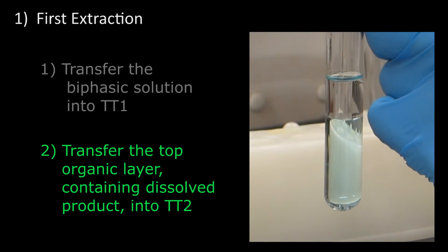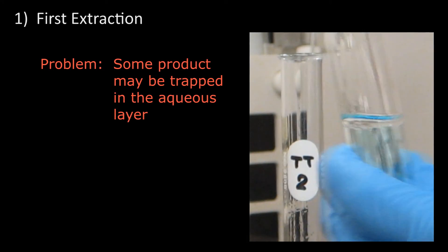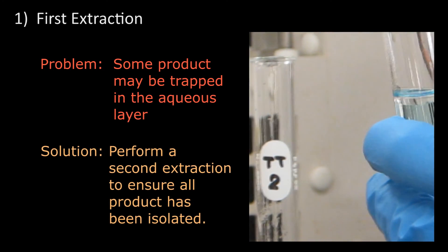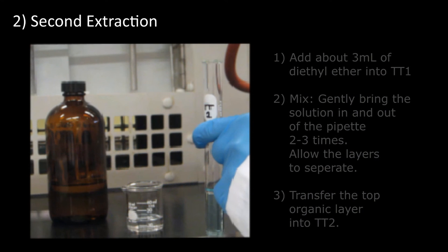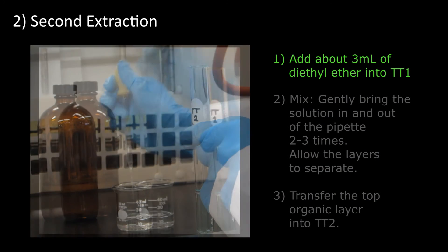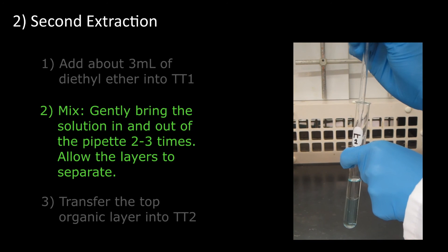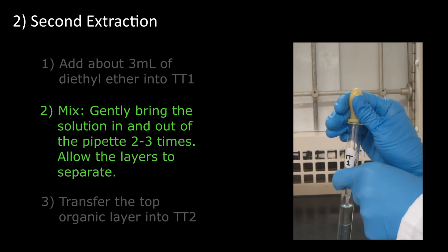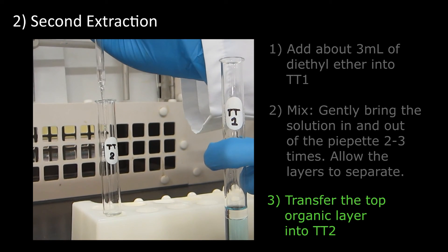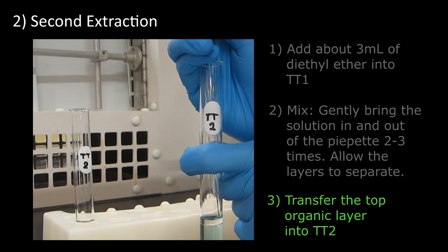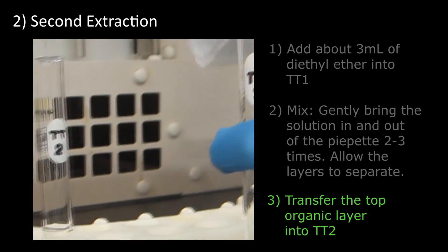Make sure not to draw any solution into the bulb of the pipette. This completes the first extraction of the original solution, but there may be more product trapped in the aqueous layer, so another extraction or two must be performed to ensure that all of the product has been isolated. To perform a second extraction, add about 3 ml of diethyl ether into TT1, which contains the water layer. Mix the biphasic solution by gently bringing the solution in and out of the pipette two to three times. Allow the layers to separate, and transfer the top organic layer containing the dissolved product into TT2, which already contains some product in ether solution.